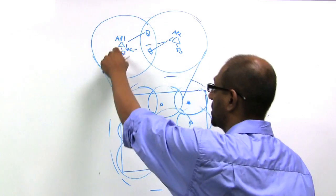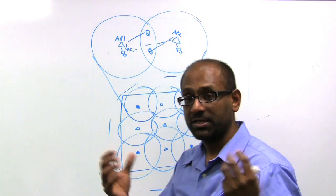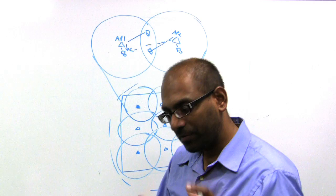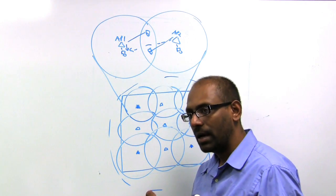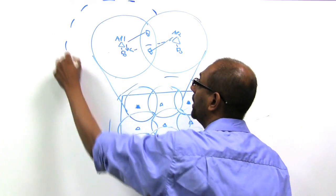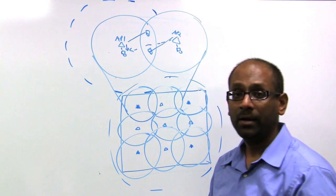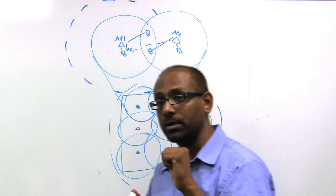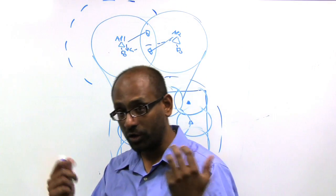And each access point advertises it so that its neighbors can hear it. Remember from that video, the point is to try to figure out what is the total contention in my region, and then try to set the WMM parameters appropriately in order to avoid collisions.